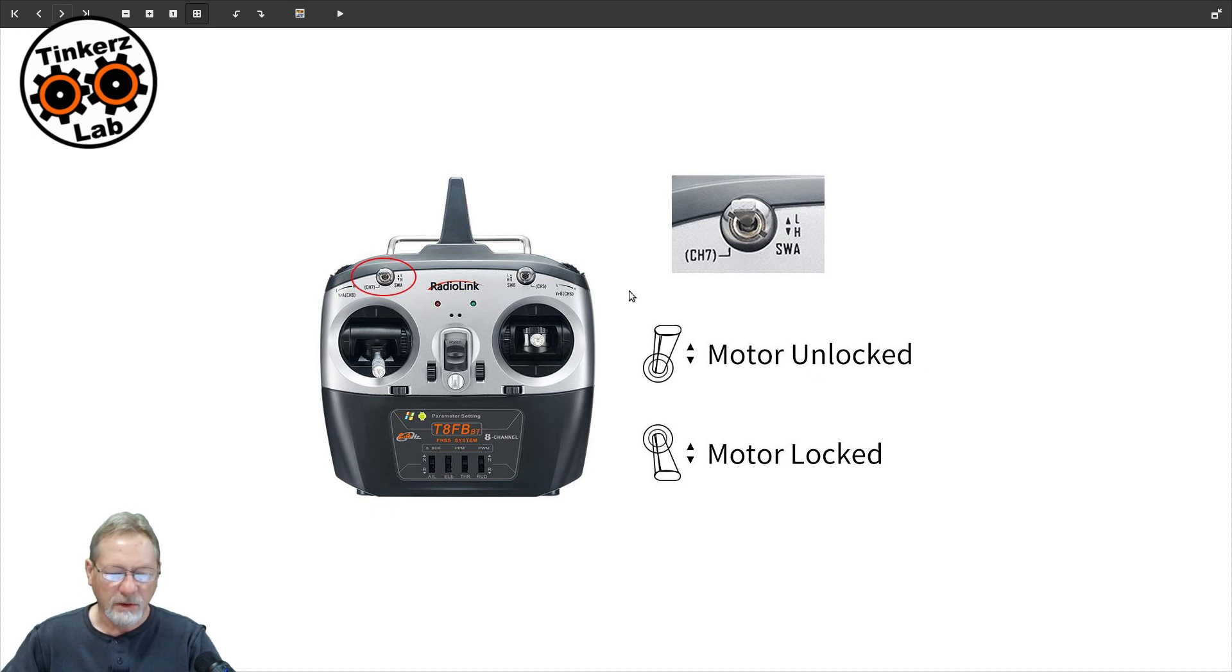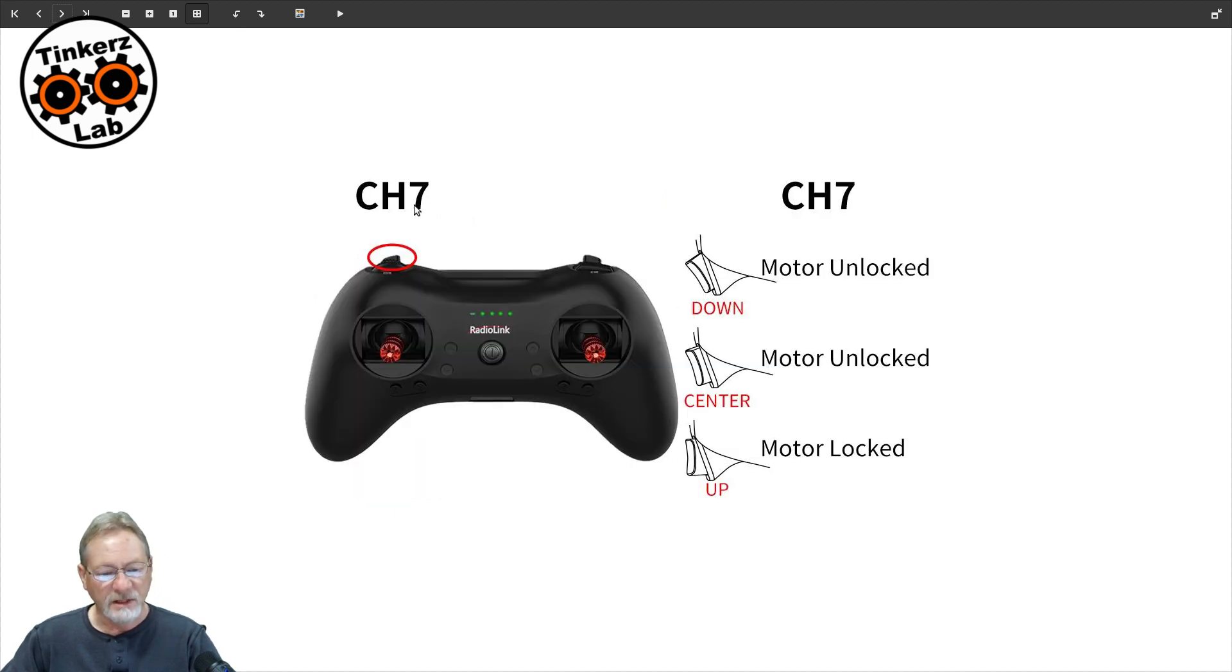All right. And this one also has a motor lock switch set up on channel 7. So it's a throttle safety switch that's built into the gyro that is activated on channel 7. It shows you the default position of the switch for channel 7 for unlocking the motor, locking the motor. And then also channel 7 on the T8S.